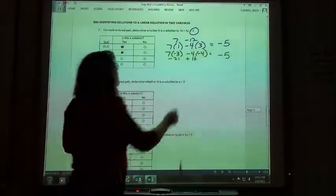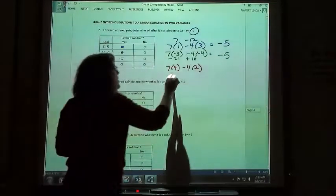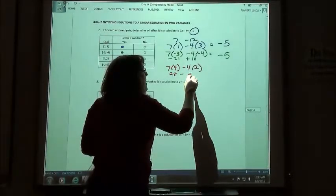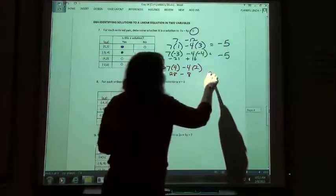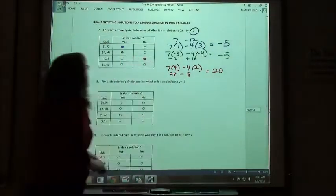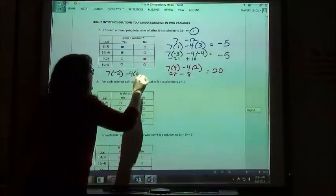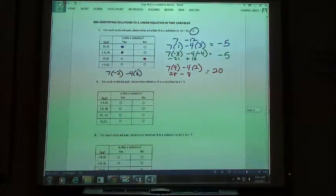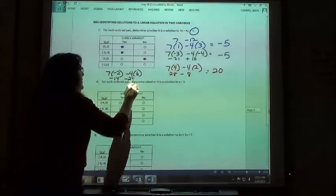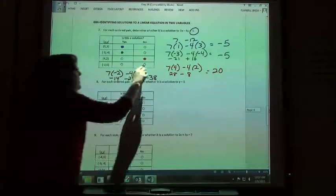Now we do it again, only we use 4 and 2. 7 times 4 minus 4 times 2. 7 times 4 is 28 minus 4 times 2 is minus 8. 28 minus 8 is not negative 5, so no, that one didn't work. Then we have to do it a fourth time. 7 times negative 2 minus 4 times 6. 7 times negative 2 is negative 14, negative 4 times 6 is negative 24. Negative 14 plus negative 24 is negative 38, not negative 5. So no.